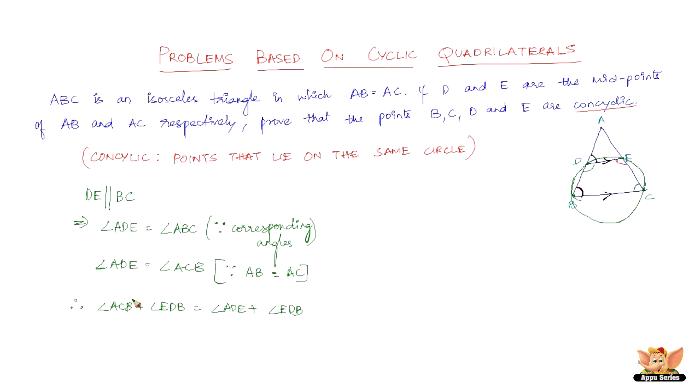Therefore we have angle ACB plus angle EDB equal to angle ADE plus angle EDB. What we are doing here is taking these two angles which are equal to each other and adding the same angle to both sides, which are definitely equal to each other. Therefore angle ACB plus angle EDB equals 180 degrees.